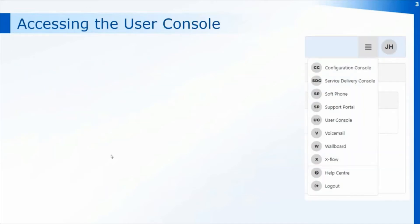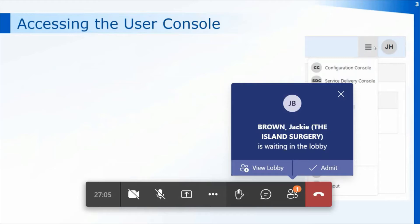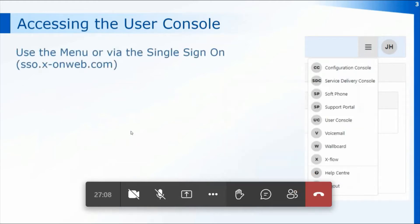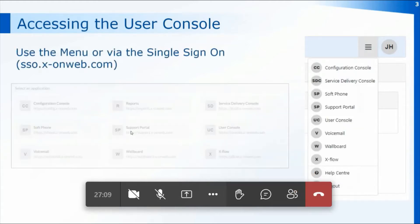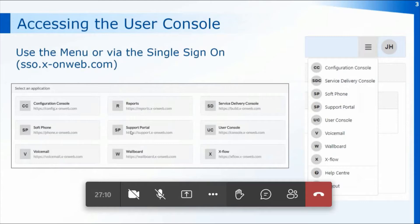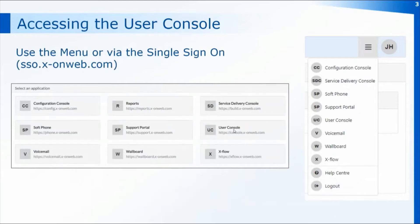To access the user console you can either go through the menu — the three lines just next to your initials at the top of each of the console pages — or you can go through the single sign-on window. When you first log in you'd be heading for the user console, which is where you'd normally head on a day-to-day basis.